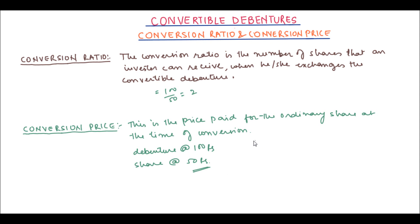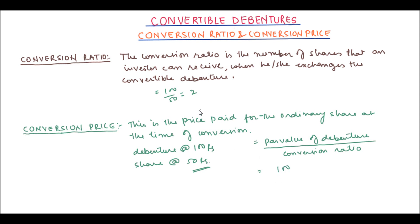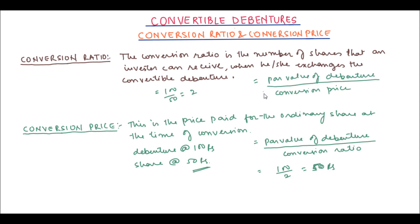The formula for conversion price is par value of debenture divided by conversion ratio. So par value of debenture is 100 and conversion ratio is 2, so this becomes 50 rupees. And the formula for conversion ratio is par value of debenture divided by conversion price. Par value of debenture is 100 and conversion price is 50, so this becomes 2.